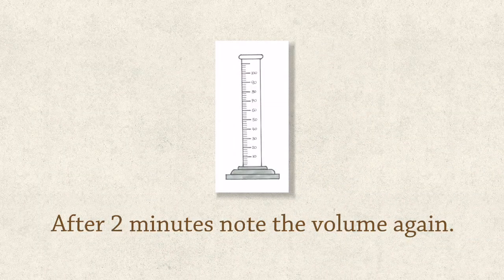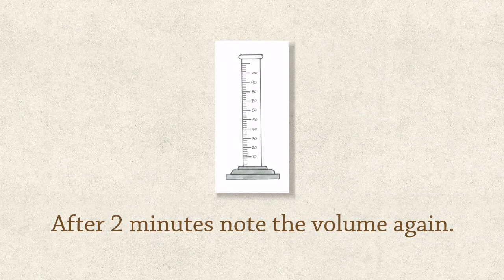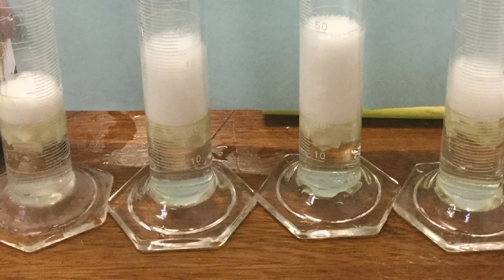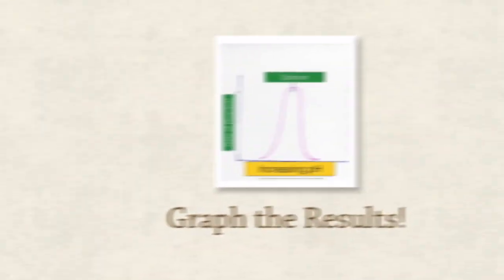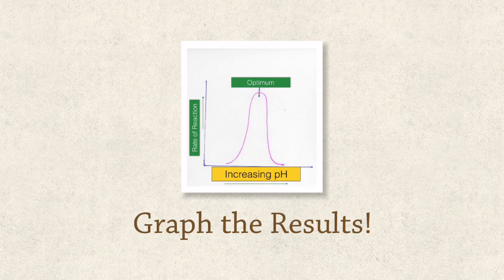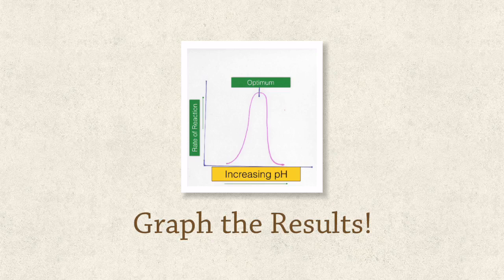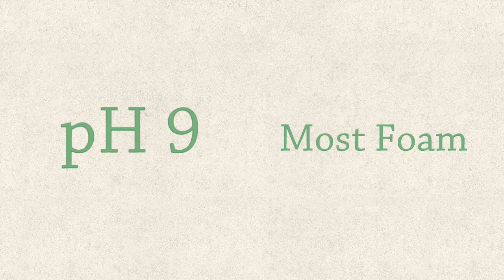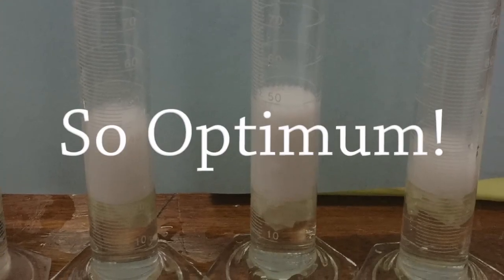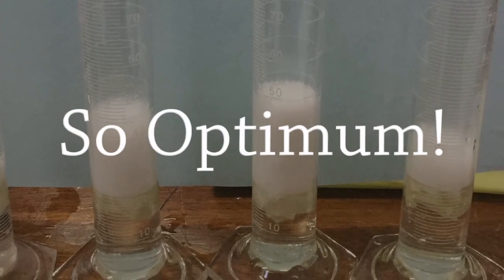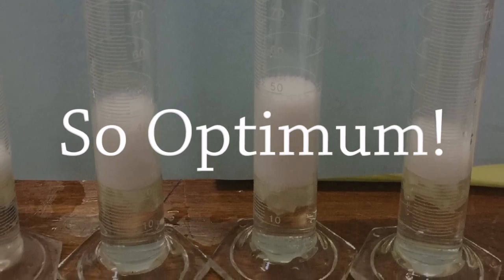We immediately noted the volume. The graduated cylinder was then returned to the water bath and after 2 minutes the volume was read again. For each of those different pH values, a different volume of foam was produced. Then you graphed your results and hopefully your graph looked a little like this. Note the higher peak and the narrower base as compared with the temperature graph. Hopefully your results showed that the greatest volume of foam was produced when buffer pH 9 was used. So pH 9 must be the optimum pH for catalase activity particularly when the catalase is sourced in fresh celery.